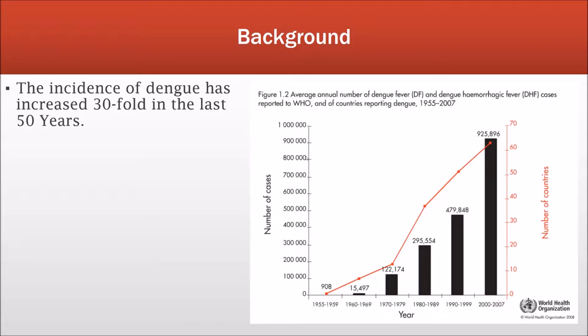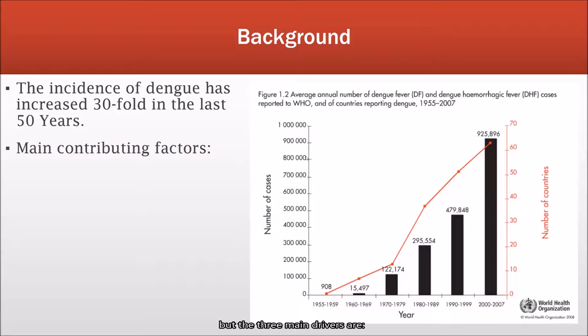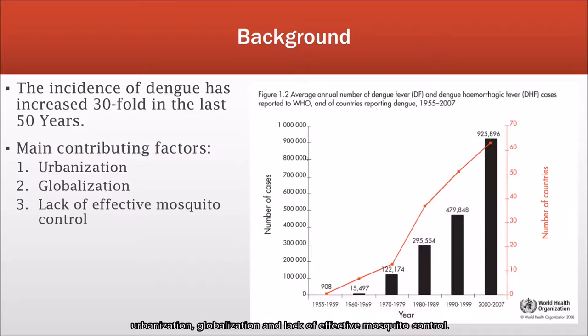In the last 50 years, incidence of dengue has increased 30-fold. There are many factors that have contributed to its emergence in epidemic dengue, but the three main drivers are urbanization, globalization, and the lack of effective mosquito control.